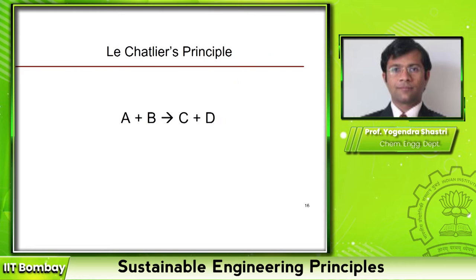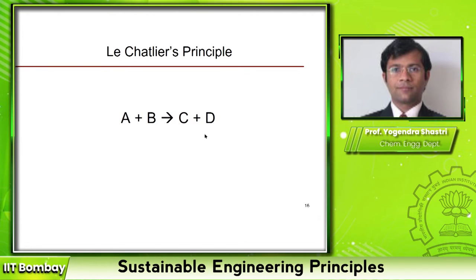One option is to keep adding A and B. The problem with that option is that because you are adding more and more A and B, your reactor size will increase, so your capital investment will go up. Secondly, you will have to purchase more A and B, so your cost will go up. A lot of that A and B will not be converted into product, so you will also need a recycle system. Adding A and B is probably not a good option.